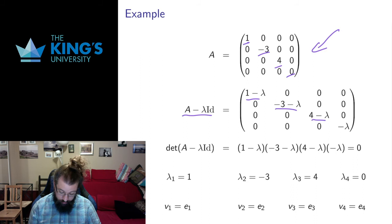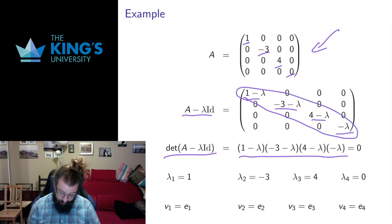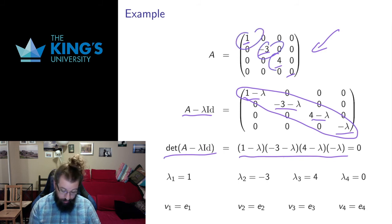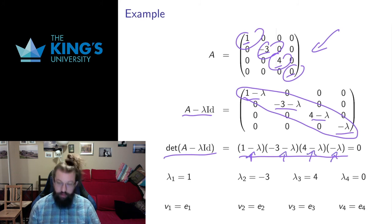If I look at A minus lambda identity, I subtract lambda from each of the diagonal elements. If I take the determinant, this is a diagonal matrix, so the determinant is just the product along the diagonal. So I get this, and if you look at this equal to 0, you will get exactly these numbers back as your eigenvalues. 1 is a root here, negative 3 is a root there, 4 is a root there, and 0 is a root there.